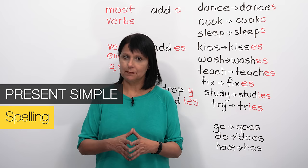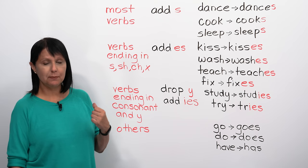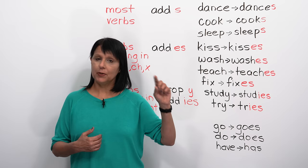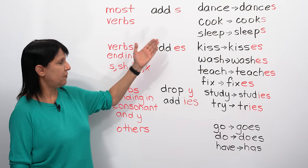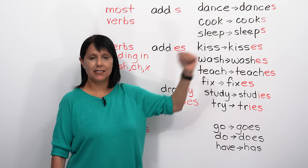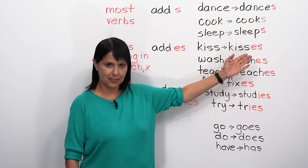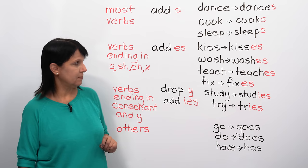Now let's look at some of the spelling changes we need to make in the present simple tense. We only need to make those changes when we're using he, she, or it. For example, I work but he works. With most verbs, all you need to do is add an S. For example: dance becomes dances, cook becomes cooks, sleep becomes sleeps.